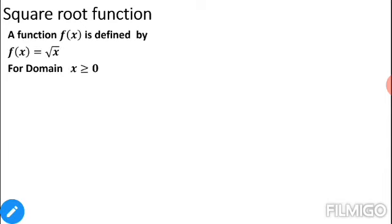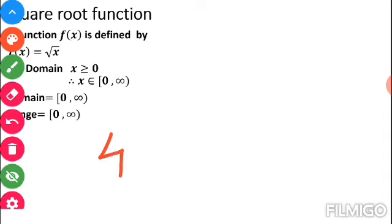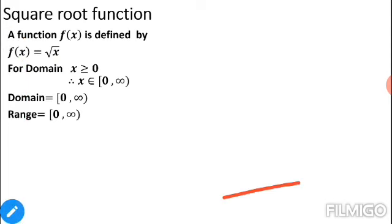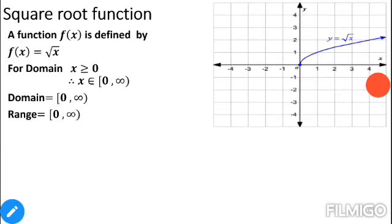The square root function f(x) = √x is defined only for non-negative numbers because the square root of a negative number does not exist. So the domain is [0, ∞). The range is also [0, ∞) — always positive outputs. Remember: we never say √4 = ±2 in this context, because one element cannot have two images. The graph goes through (1,1), (2, 1.41), (3, 1.73) and curves upward from the origin.